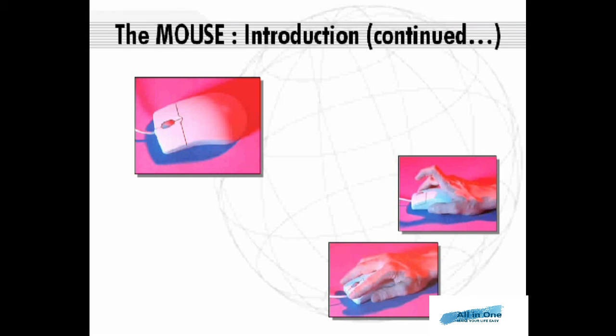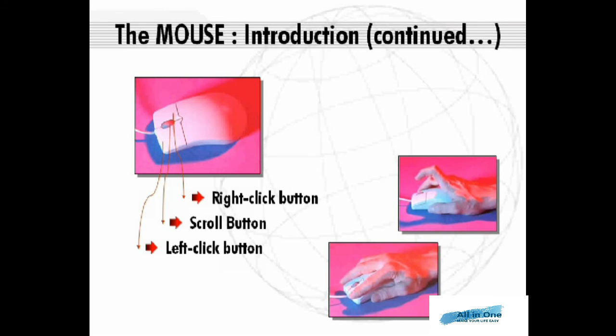There are many types of mice, but the regular ones used nowadays are wheel mouse buttons, which have a right click button and a left click button and a scroll button to move up and down in the middle.